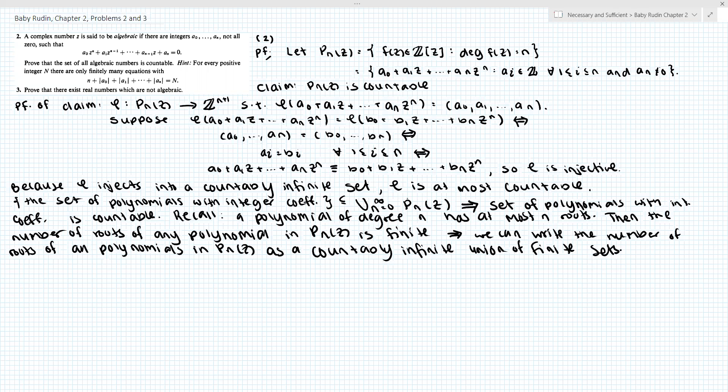But then recall, we can also write the set of polynomials with integer coefficients as a countable union of countable sets. So we can write the number of roots of a polynomial with integer coefficients as a countable union of countable sets.